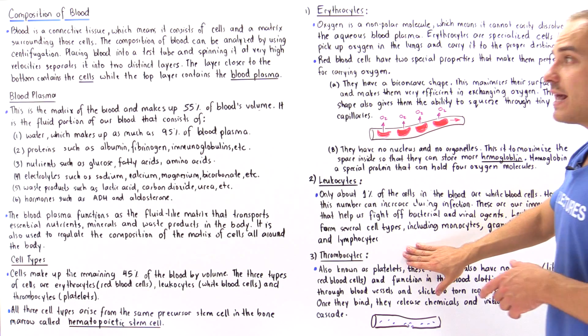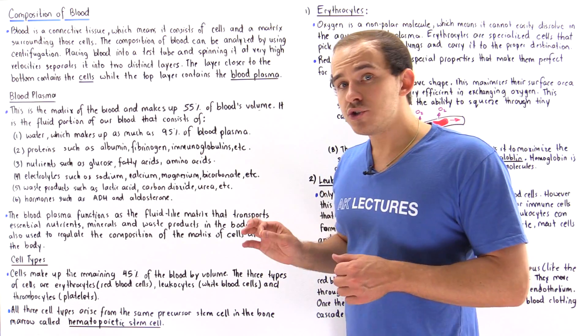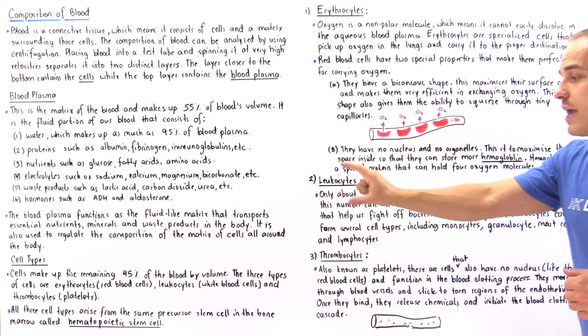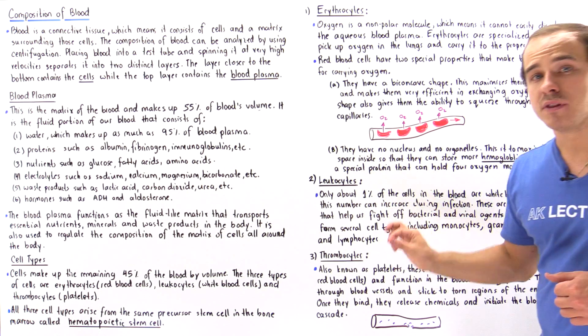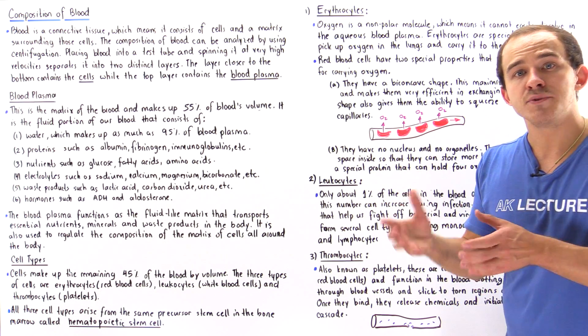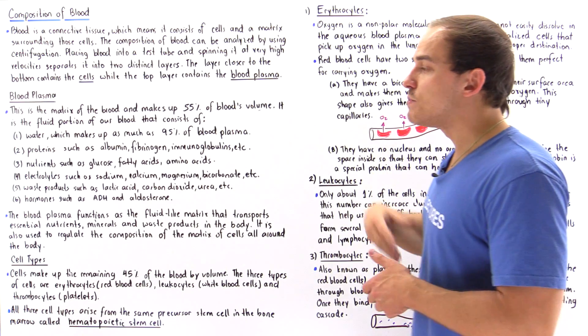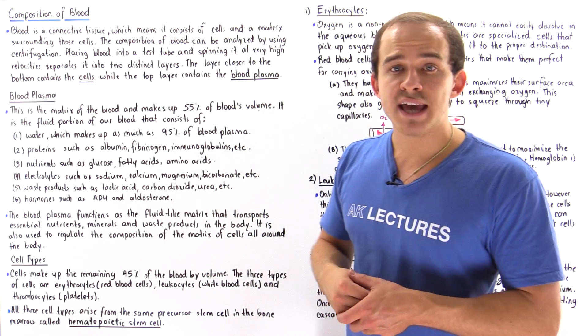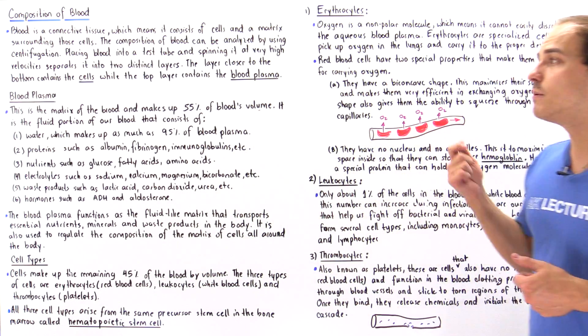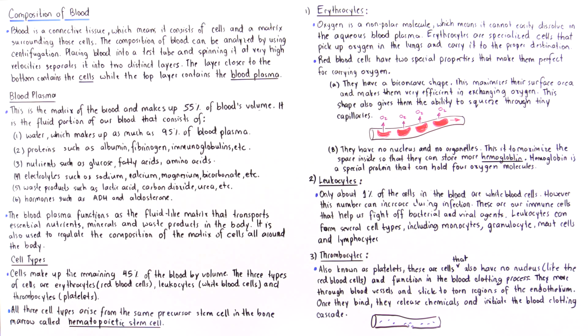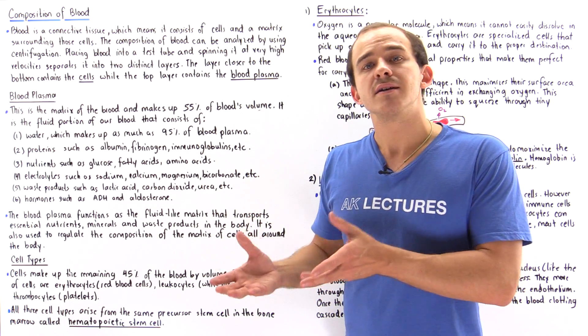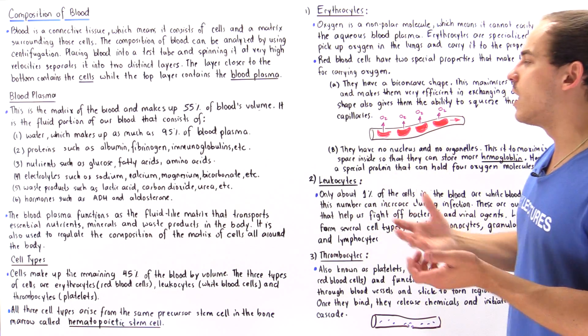Now our platelets actually function in the blood clotting process. So they travel along our blood vessels until they come to a cut or a hole in the endothelium of our blood vessel. And then they stick to that hole and they initiate a process. They release chemicals that initiate the blood clotting process. And we'll discuss this process in much more detail when we discuss the immune system and the blood clotting cascade.